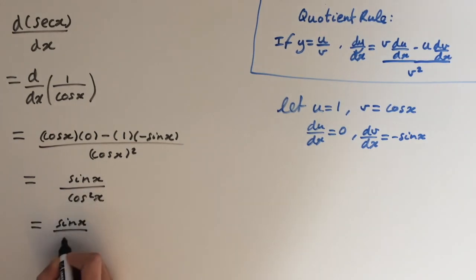sine of x over cosine of x times 1 over cosine of x. And this equals tan of x times sec of x.